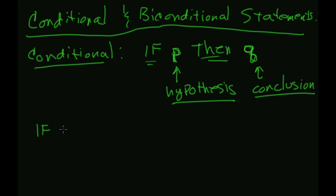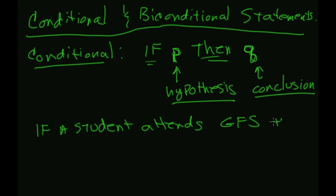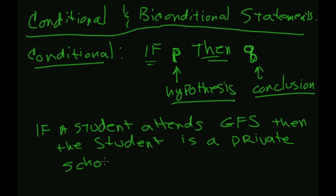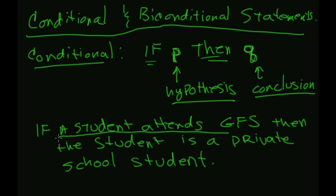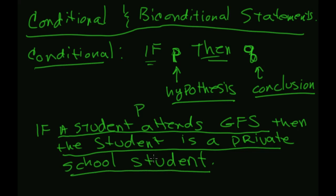For example: if a student attends Garrison Forest School, then the student is a private school student. The hypothesis is 'a student attends Garrison Forest' and the conclusion is 'the student is a private school student.' Every time the hypothesis p is true — every time we have a student who attends Garrison Forest — it follows that q, the student is a private school student.